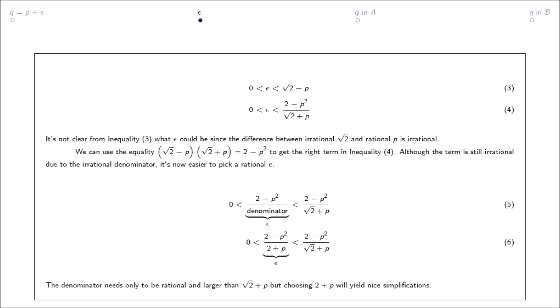The denominator needs only to be rational and larger than square root 2 plus p, but choosing 2 plus p will yield nice simplifications.